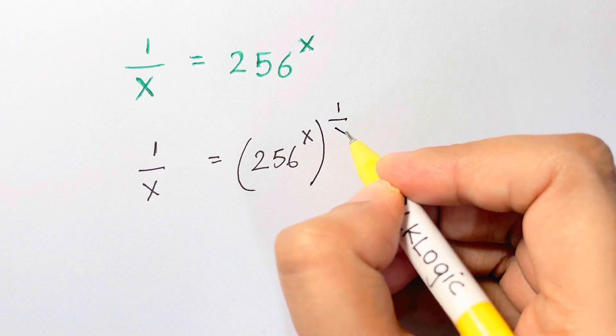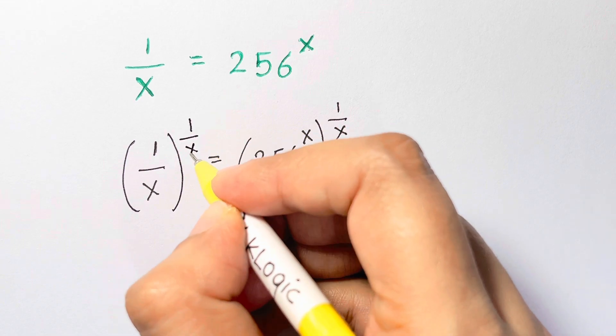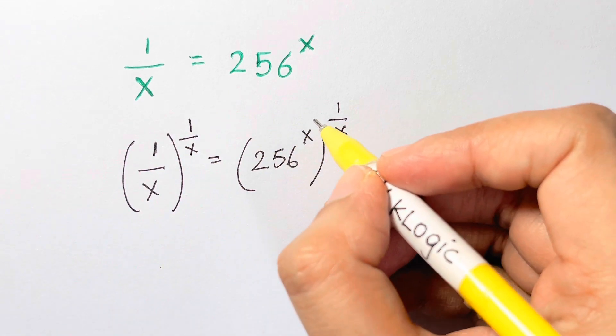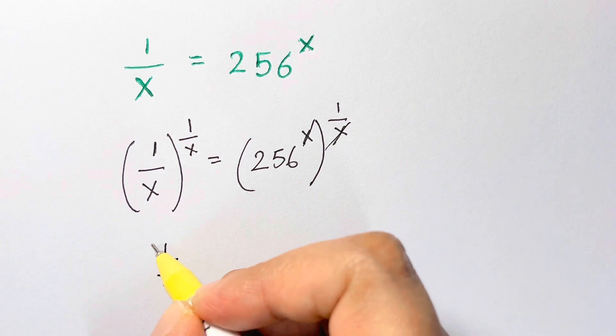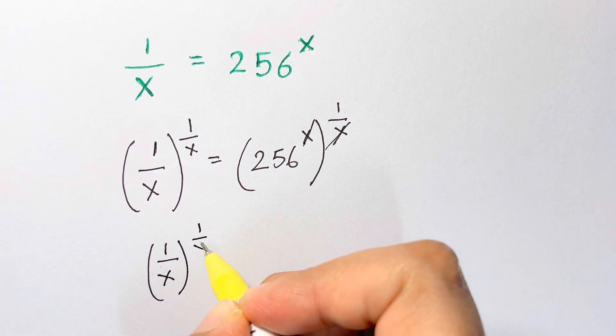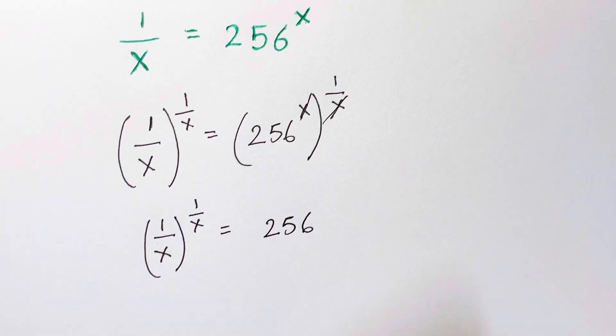Take 1 over x. Now as you have taken this side, you have to take it this side as well. So we have 1 over x in the exponent here. You can cancel out x and x. What you're left with: 1 over x to the power of 1 over x is equal to 256.